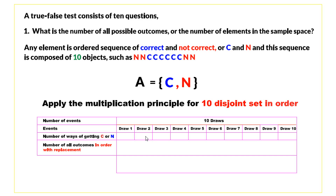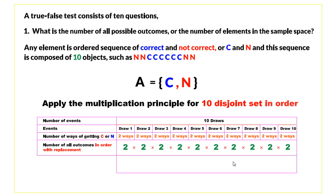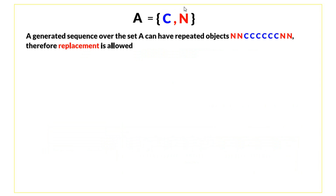After answering all the questions, any question can be either correct or not correct — there are two ways for each question. The number of ways all 10 questions may come out as correct or not correct is the multiplication of all these ways, and that is 1024. These are the number of ways this true-false test can be answered.